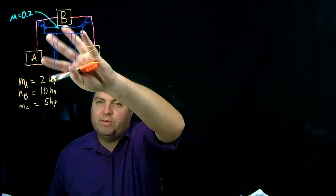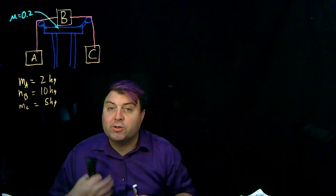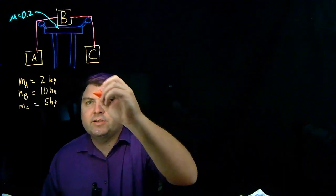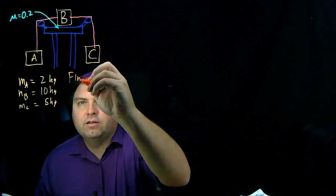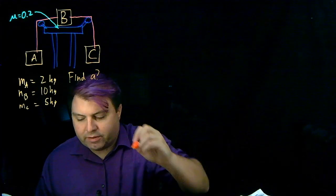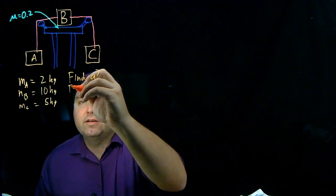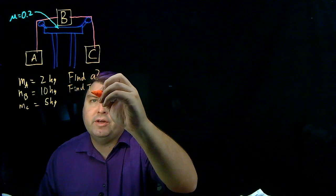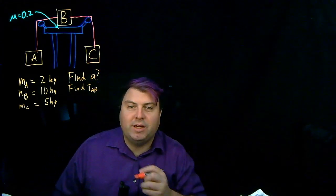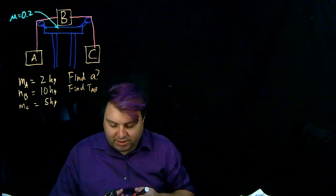So we know there's going to be kind of a twist in this direction for the motion. We want to find the acceleration, and then we also want to find tension between A and B. So how do we do this?